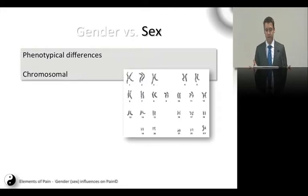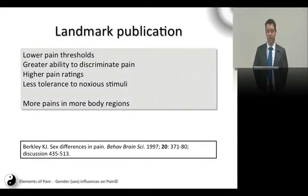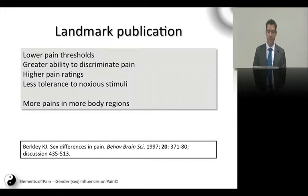Sex refers purely to the phenotypical differences between individuals, based in your chromosomes — you're either male or female according to your chromosomes. Moving on to a landmark publication from 1997 by Berkley, appropriately termed 'Sex Differences in Pain' rather than gender differences. The paper stated that females had lower pain thresholds and a greater ability to discriminate pain, higher pain ratings, and less tolerance to painful stimuli.